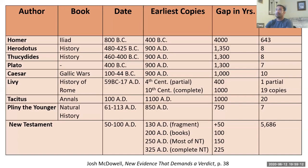Now let's look at this in comparison with all other ancient works. The staggering number of New Testament copies far exceeds anything else from antiquity, and the time gap between composition and surviving copies is dramatically shorter. The closest competitor has only seven copies with a gap of 750 years. This blows everything else out of the water — but why does that matter?